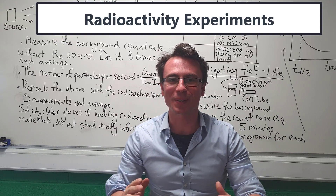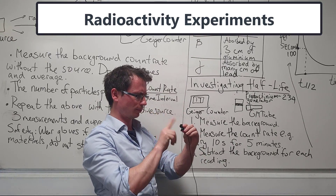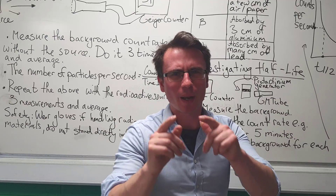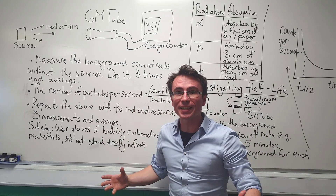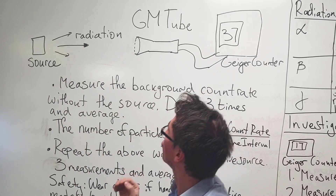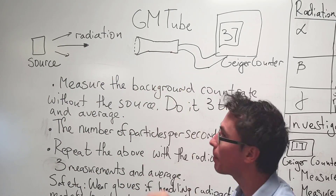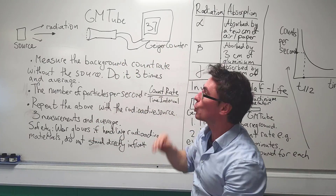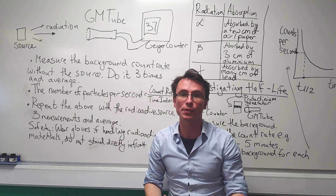Let's revise experiments for radioactivity. By the way, if you're wondering why the sound of this video is not so good, I've done so many videos recently that my microphone has stopped working, but I thought I'd get this video out in time. So let's start by finding the count rate. Over here, we have the radioactive source, and that radiation is being picked up by a Geiger-Müller tube, which is connected to a Geiger counter that shows us the number of counts.